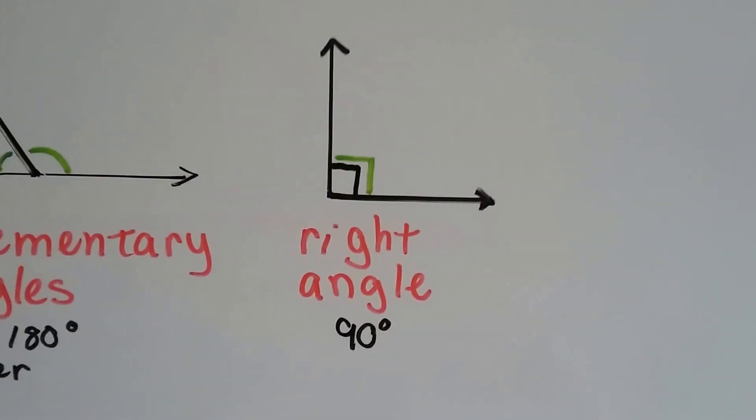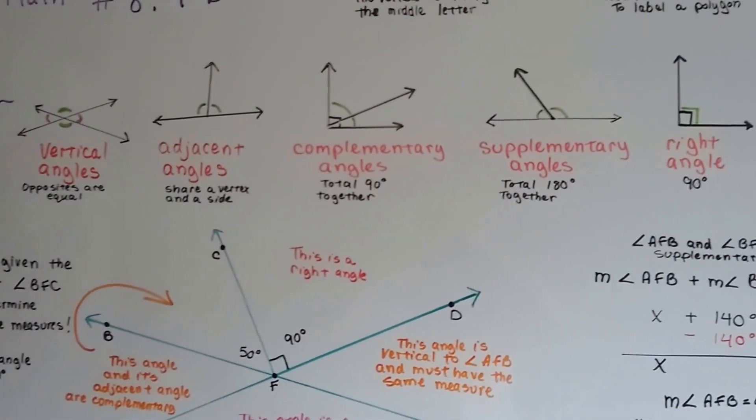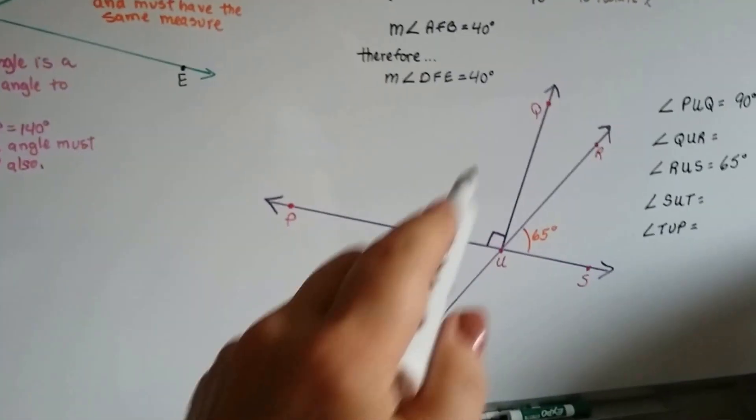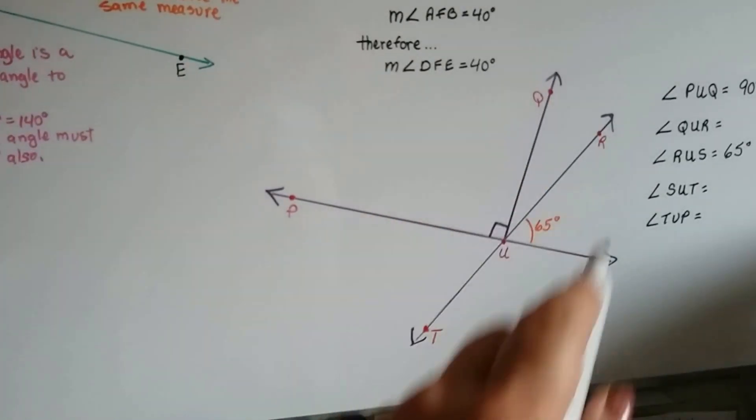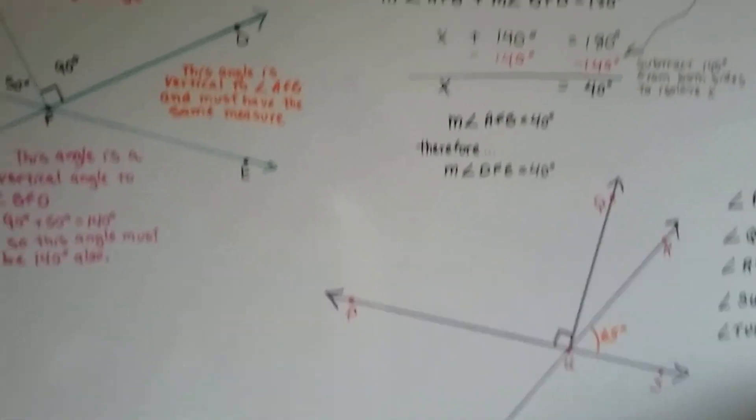Now, by knowing these rules, if you can memorize this, that would be great. So you ought to write them down in your notes. By knowing these rules, we could find out all the measures of all of these angles by just knowing one or two measures, and I'll show you.